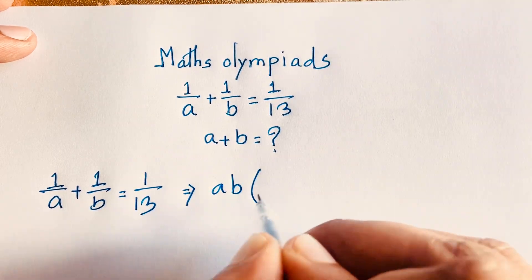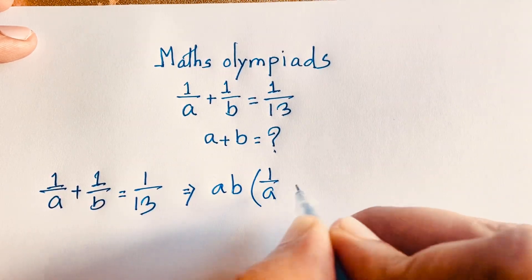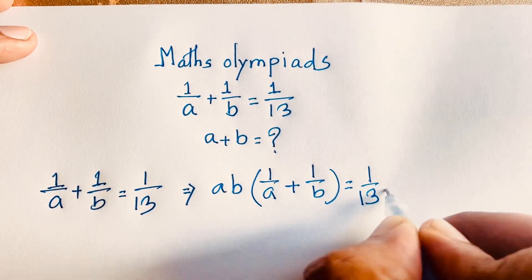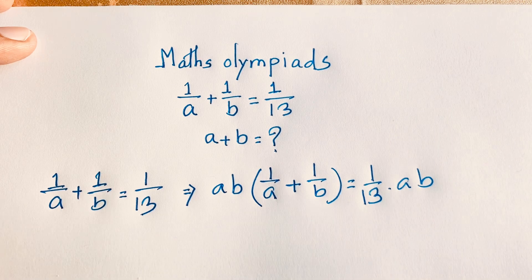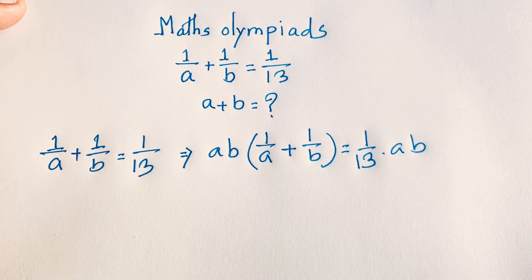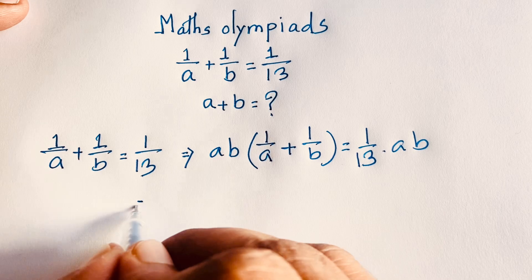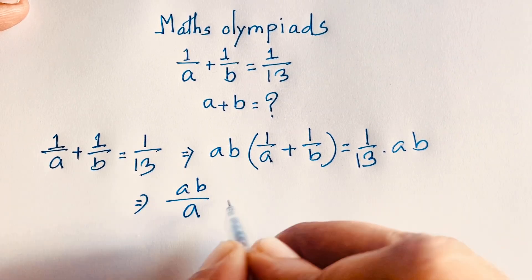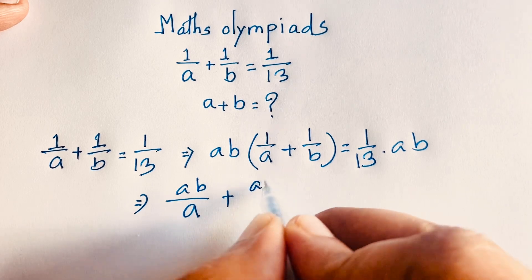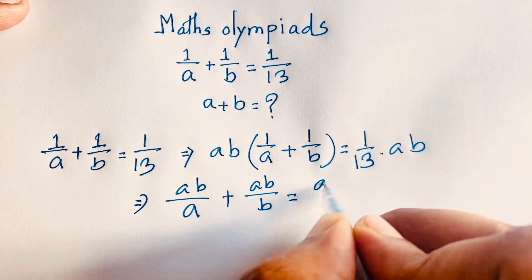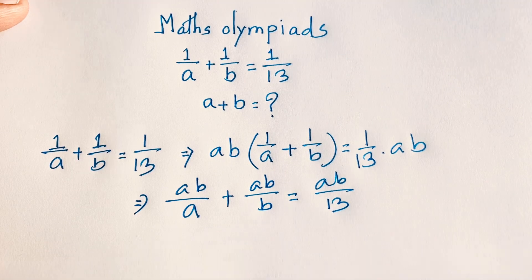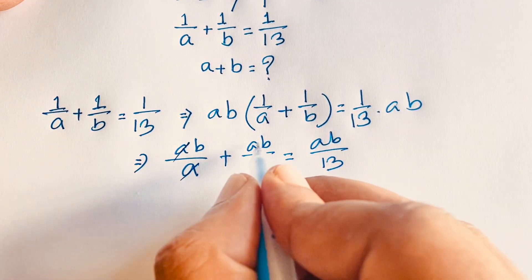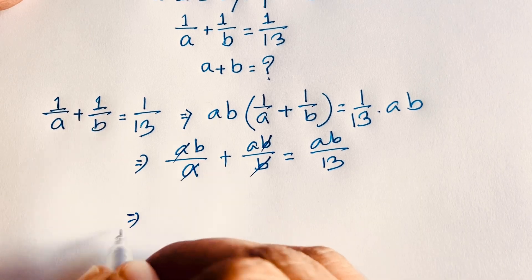I multiply both sides by ab, so it will be ab times (1 over a plus 1 over b) is equal to 1 over 13 times ab. You can see easily this expression becomes ab over a plus ab over b is equal to ab over 13.